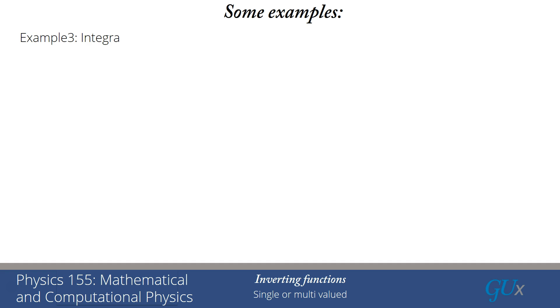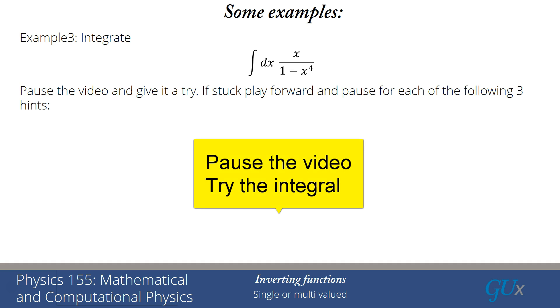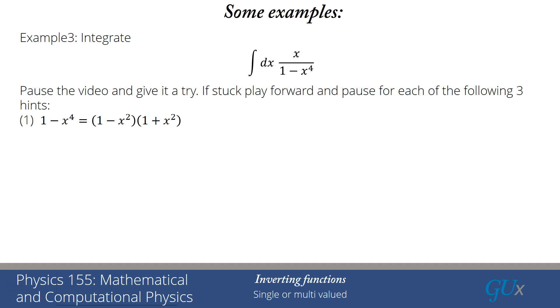Okay, we're going to now go to a somewhat more difficult example. We're going to integrate x over 1 minus x to the 4th. And I'd like you to pause the video and give it a try. If you're stuck, you can play forward. I'm going to give three hints, one after the other. And you can try again after each hint or until you've seen enough hints that you think, ah, okay, now I think I can try it. So let's pause the tape and give it a try. Okay, I can see that either you solved the problem or you're looking for the first hint. The first hint is that we can factorize 1 minus x to the 4th. Now, pause again and give it a try.